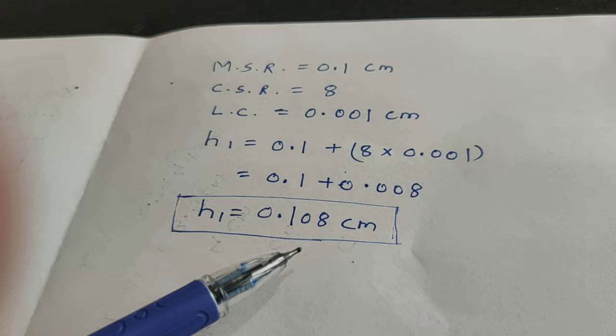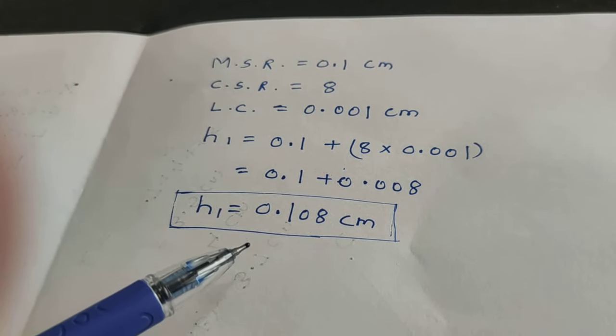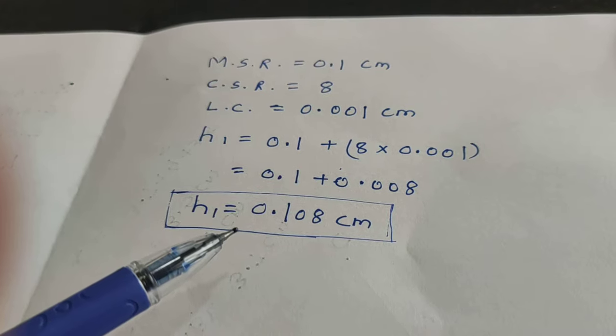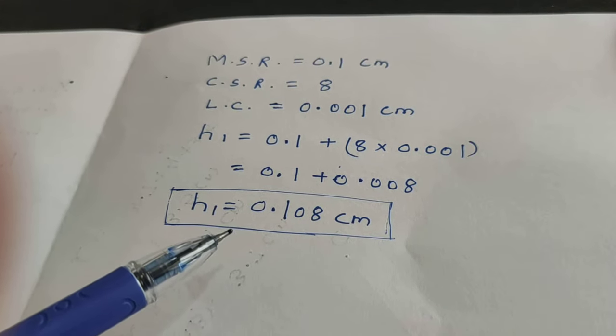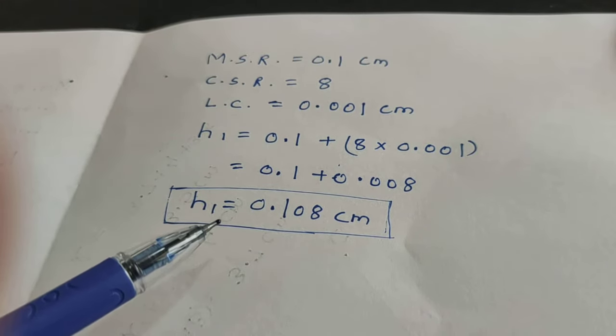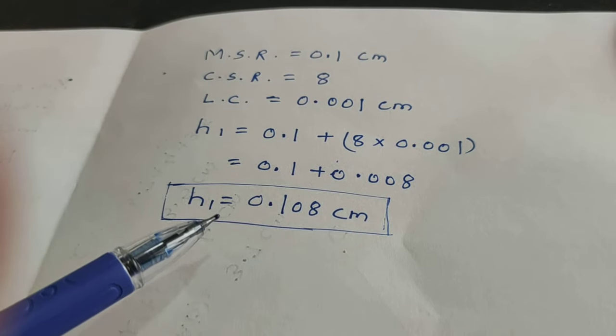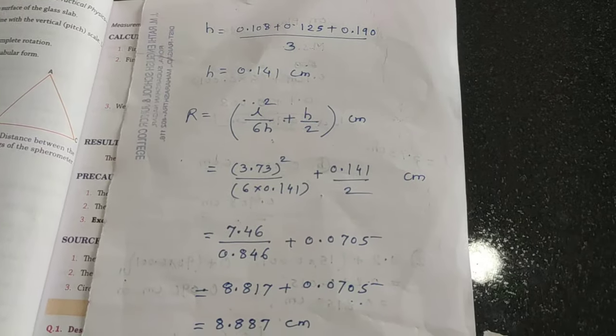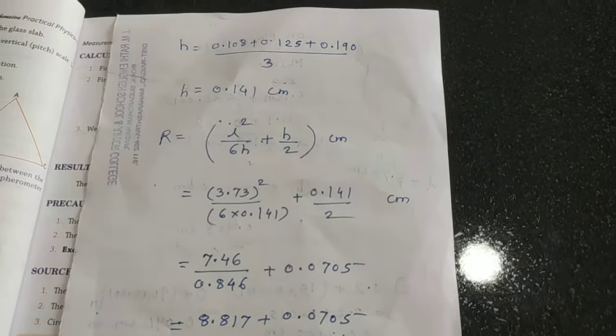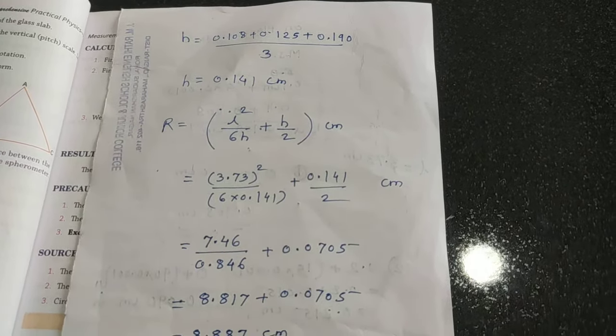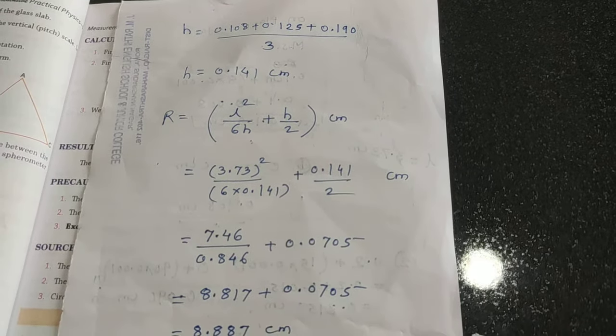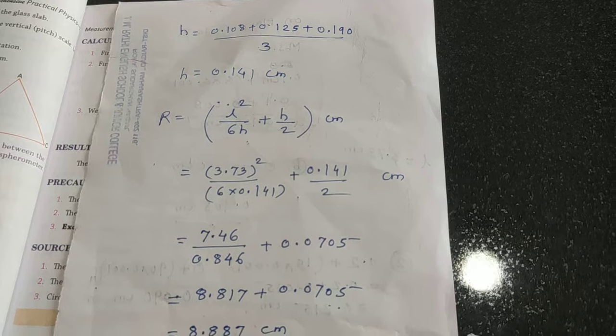It is not necessary that every time the second reading will be 0. If you get a value other than 0, take the difference between the two readings to get the height of the convex lens. In the observation table I have shown you only one reading. Take three readings by changing the position of the three legs of the spherometer.